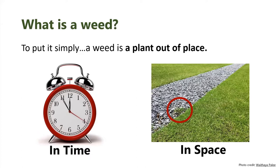It can also be a plant out of place spatially — out of place in space. In this picture, you see grass that has encroached into gravel pavement, or it could be a prostrate weed that goes into your tomato field. It's just a plant that is out of place.